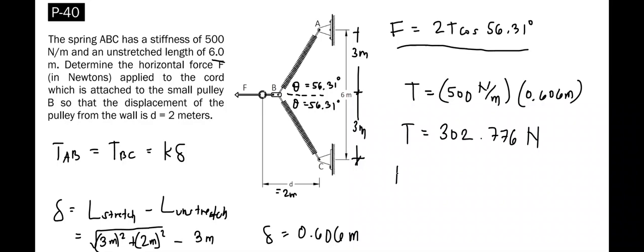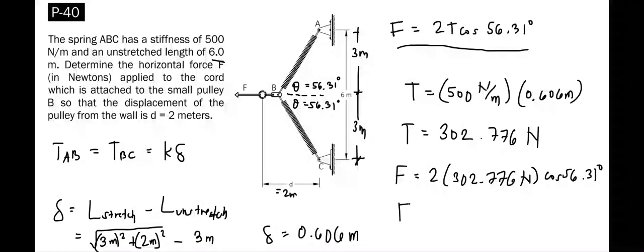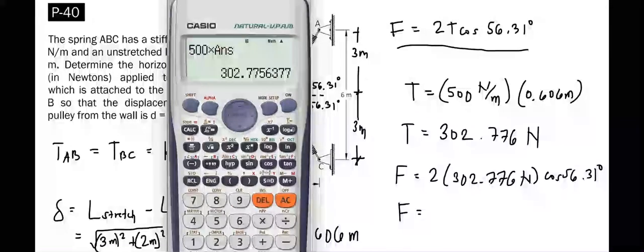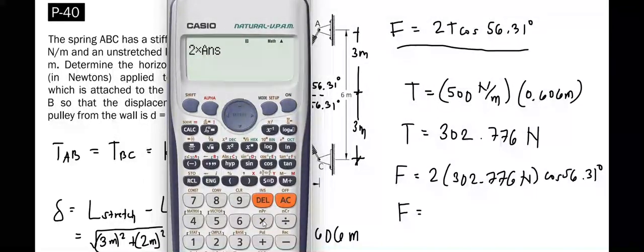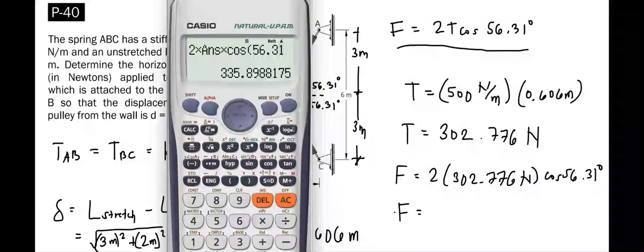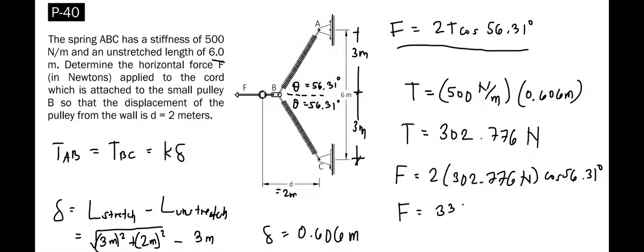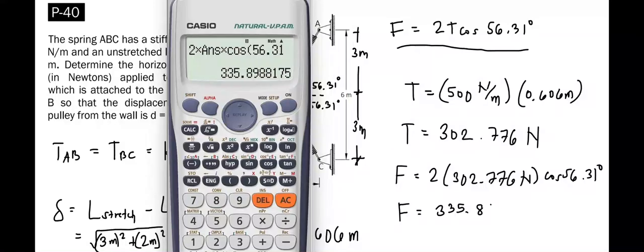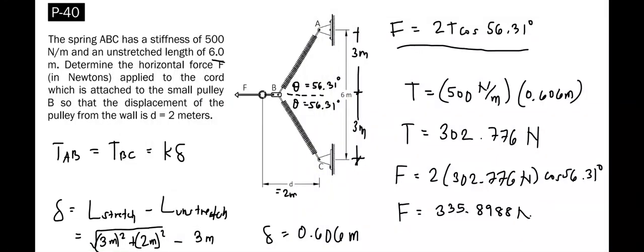To solve for F, we substitute this value to the first equation. We get F equal to 2 times T times cosine of 56.31, equal to 335.88 newtons. This is our final answer.